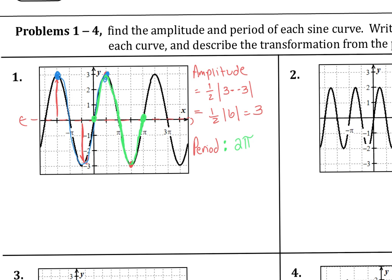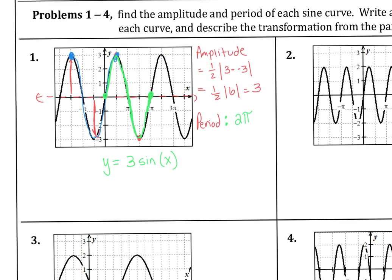Now when we write our equation, we say y equals — because the amplitude is 3 — 3 times the sine. Remember, the period of sine to begin with is 2π, so the period didn't change here. We can just say 3 times the sine of x. The only transformation that happened is a vertical dilation by a factor of 3, which increases the range from negative 1 to 1, to negative 3 to 3.